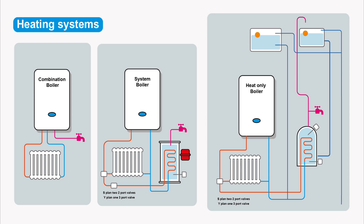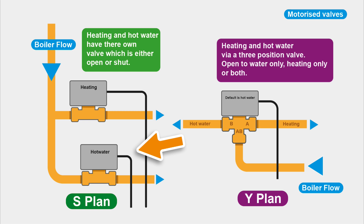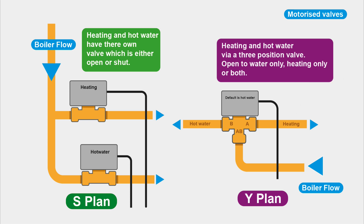On an S-plan, heating and hot water have their own valves which can stop or allow water flow. The Y-plan has a three-port valve that can send water to heating, hot water, or both. S-plan is much more commonplace nowadays - it's easy to install and easy to add another zone. You could have upstairs, downstairs, and underfloor heating all separately controlled.